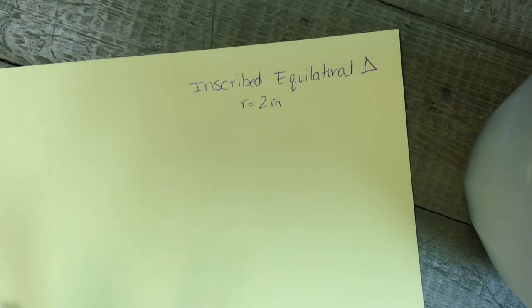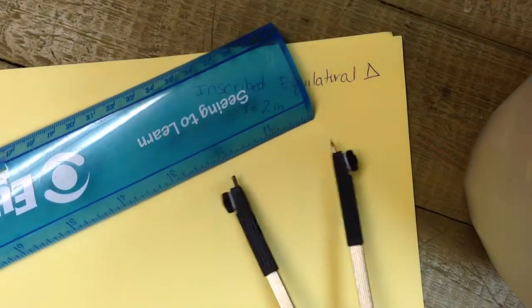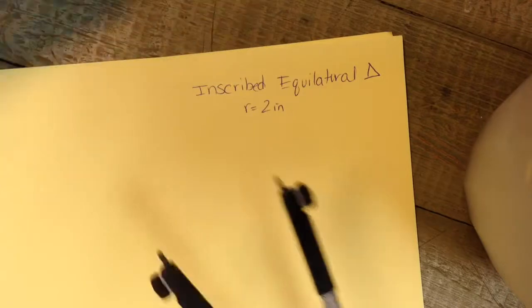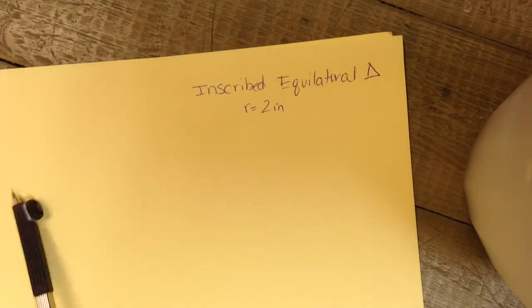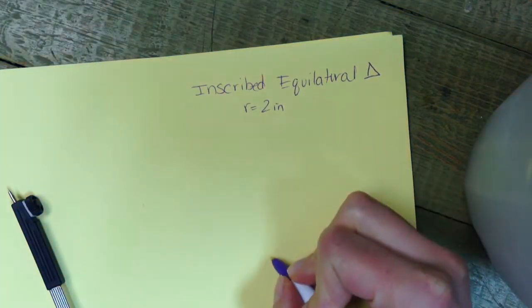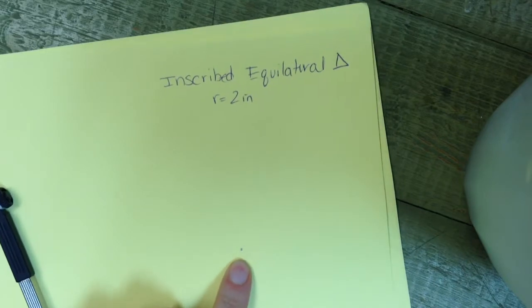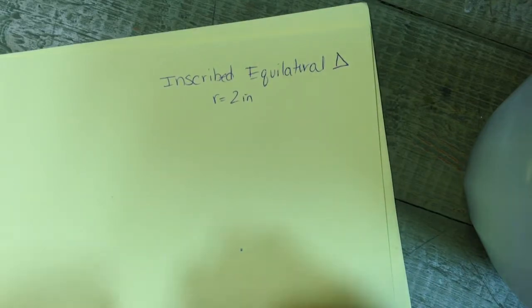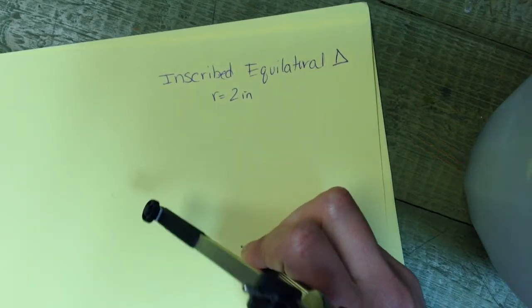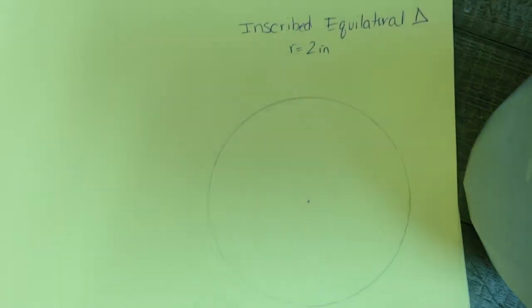I've already taken my ruler and measured off two inches with my compass. I'm going to plot a point that's going to be the center of my circle, and now I'm just going to construct a circle with that point. There's my circle.